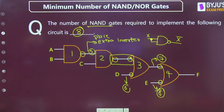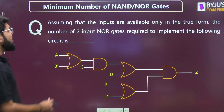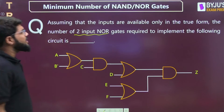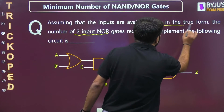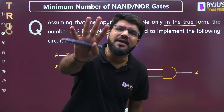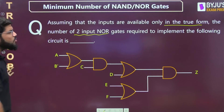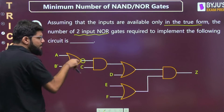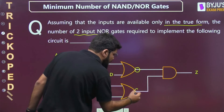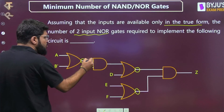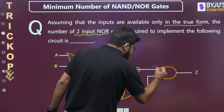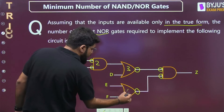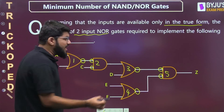Let's quickly do one more. What is the minimum number of two-input NOR gates required to implement the following circuit, assuming inputs are available only in true form? To convert OR into NOR: place bubble at the output. To convert AND into NOR: place bubbles at the inputs. Everything is now NOR gates, giving us 1, 2, 3, 4, 5 gates. Now I check for extra inverters.